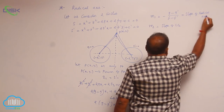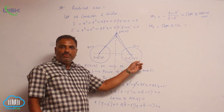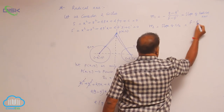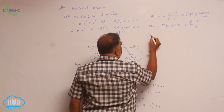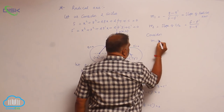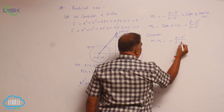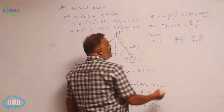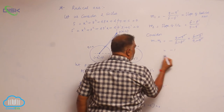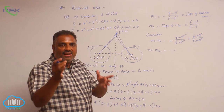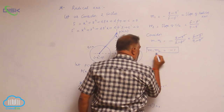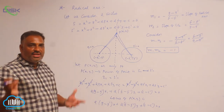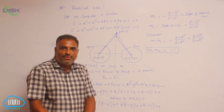Now, consider m₁ × m₂ = [−(g − g')/(f − f')] × [(f − f')/(g − g')]. The numerator and denominator cancel, leaving m₁ × m₂ = −1. This condition clearly shows that the two lines are mutually perpendicular. Therefore, the conclusion is: the radical axis is always perpendicular to the line of centers.